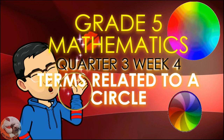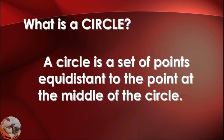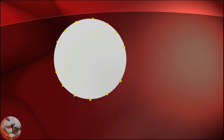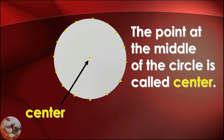Welcome to Grade 5 Mathematics, Quarter 3, Week 4: terms related to a circle. First, let's define a circle. A circle is a set of points equidistant from the point at the middle of the circle. These points all have the same distance from the center, and the point at the middle of the circle is called the center.